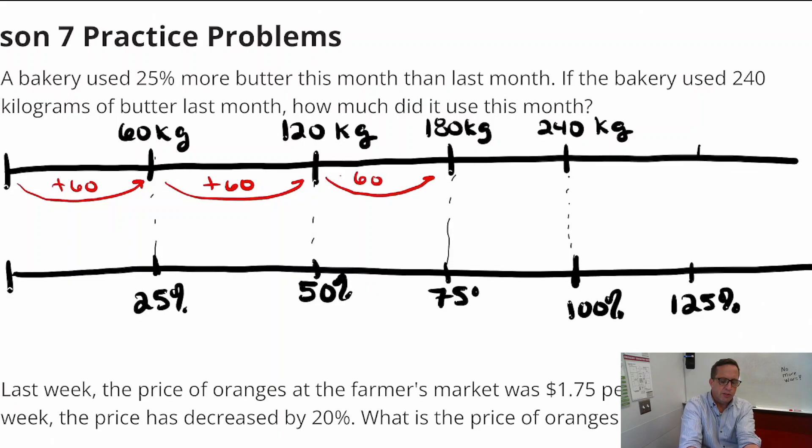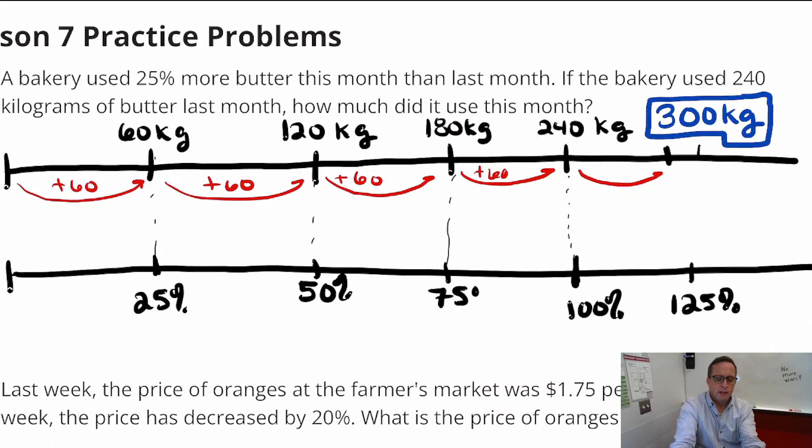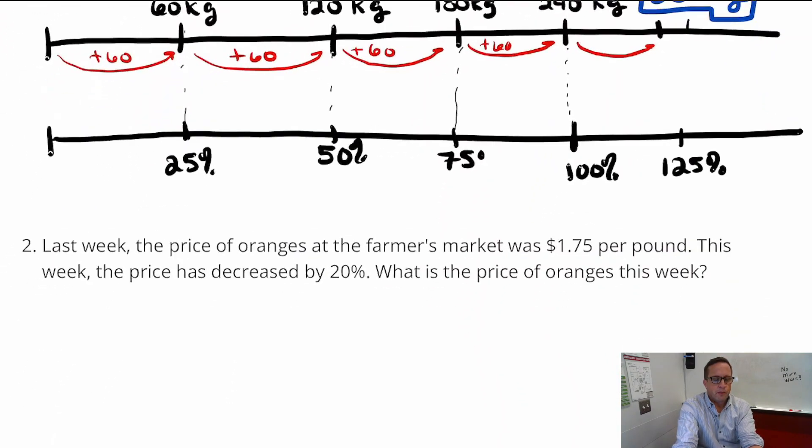So it's really easy to see the increase, because that's what we're interested in. We're interested in how many kilograms is it this month. And so now it's just a matter of adding 60 onto 240. So just do 240 plus 60, and that is going to be 300 kilograms. That's quite a bit.